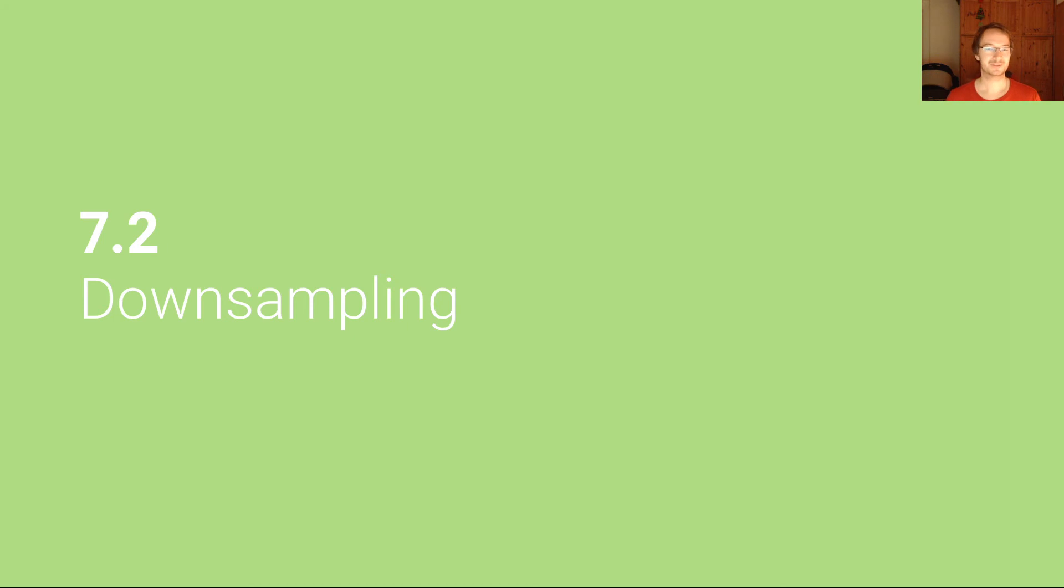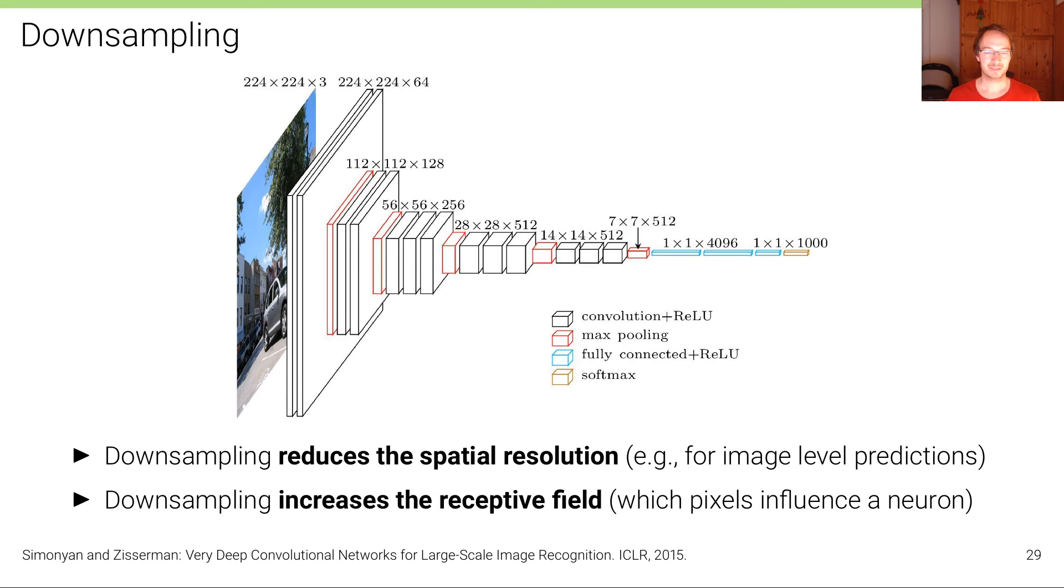This unit is about downsampling. Here we see again our VGG network architecture. As we've seen in a previous unit, convolution operations maintain the spatial resolution of the input. They leave it unaltered. However, downsampling operations such as max pooling reduce the spatial resolution, in this case from 224 to 112.